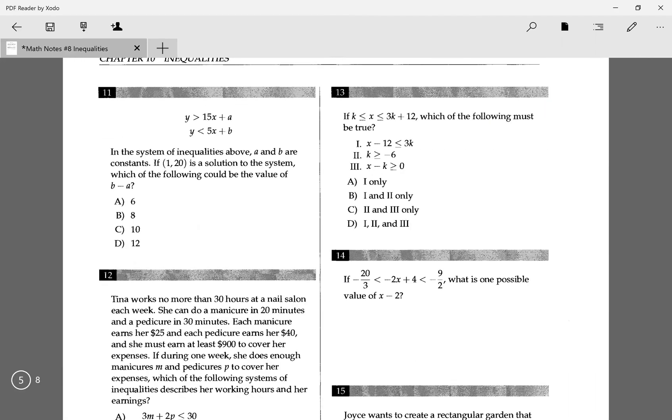Finally, I'm going to go over number 14. If negative 20 over 3 is less than negative 2x plus 4, which is less than negative 9 over 2, what is one possible value of x minus 2? I realize here that x minus 2 is this divided by negative 2. So I'm taking that approach, but first I want to put this into two different equations. So I have negative 2x plus 4 is greater than negative 20 over 3, and negative 2x plus 4 is less than negative 9 over 2.